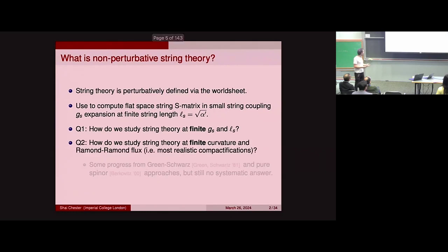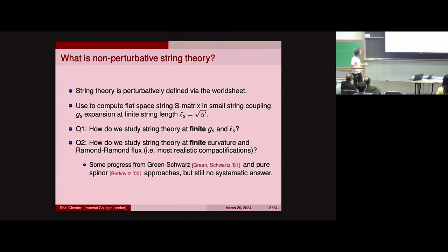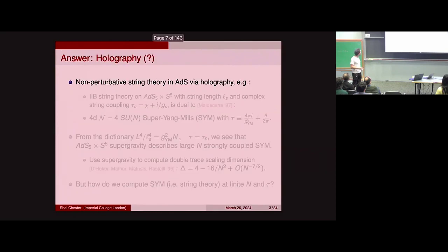Furthermore, usually in most cases, we only know how to study string theory in flat spaces. There are some exceptions, but that's for the most part the case. We'd also like to understand how to study string theory at finite curvature and Ramond-Ramond flux, which corresponds to most realistic compactifications. There has been some progress using the Green-Schwarz approach to the superstring, as well as the pure spinor approach. But to this day, there's still no systematic way of understanding string theory at finite curvature. The goal is to understand string theory at finite curvature and at finite string coupling in order to understand string theory non-perturbatively.